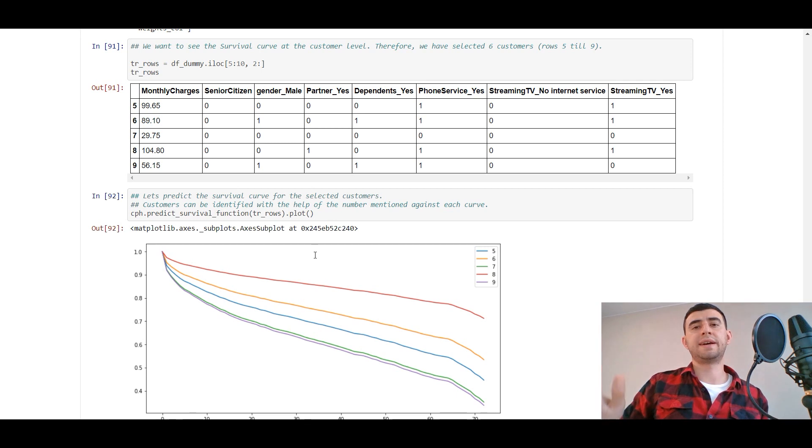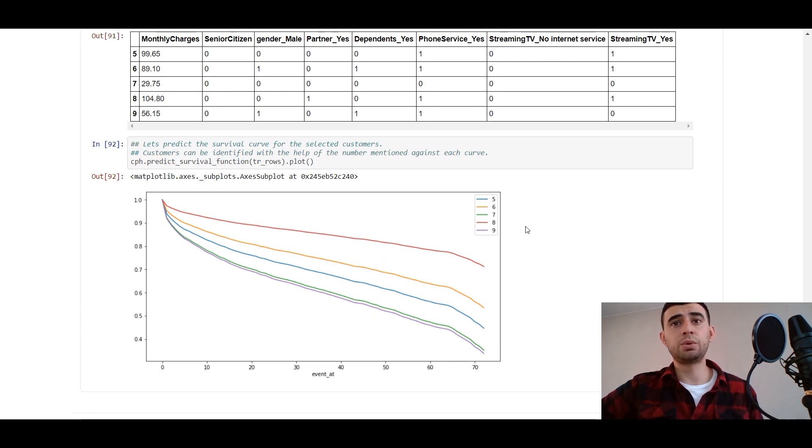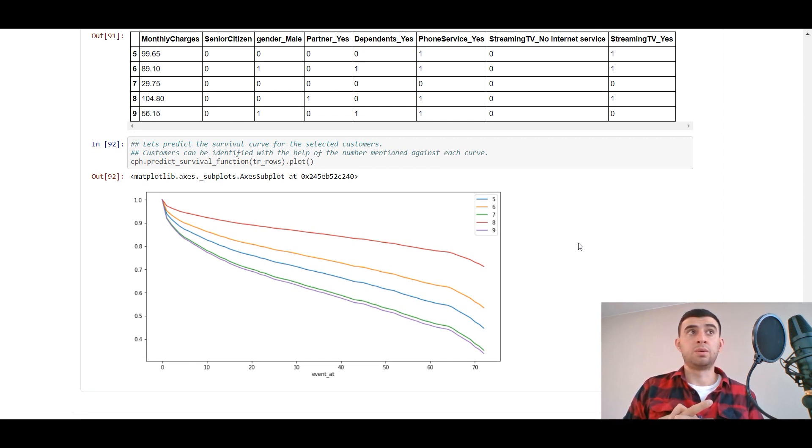What's next? An awesome thing that we can take from the Cox proportional hazard model is that we can see the survival curve on the client, on the rows, on a level. So we take the Cox proportional predict survival function with the rows that we are interested in, like these rows from 5 to 10 and other rows that we choose. Then plot it and we will see on the client level the survival curve. It's very important for companies to see this survival curve on the client level because there are a lot of very important clients. For example, you want to know: would our contract with this client last for 40 days? Here for client nine it would last with 60% chance.